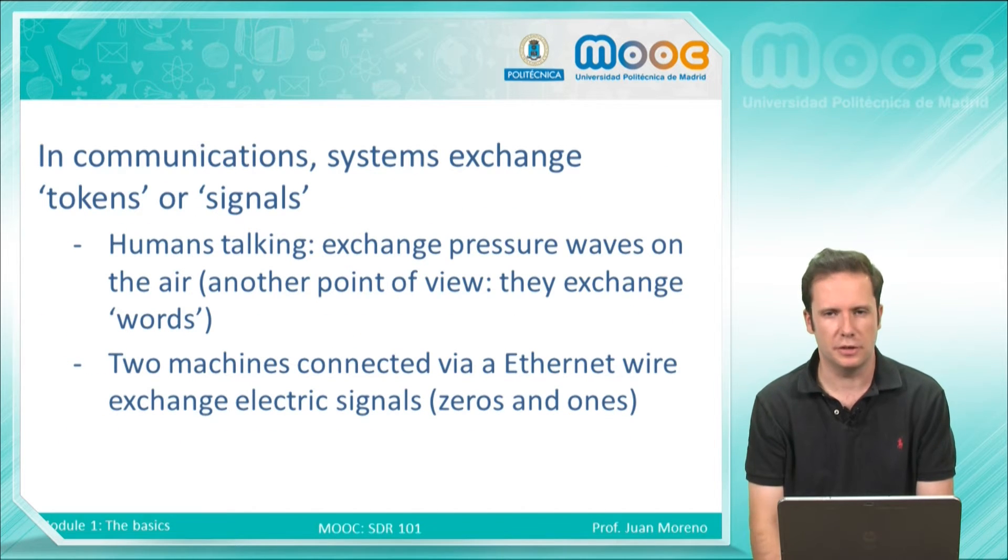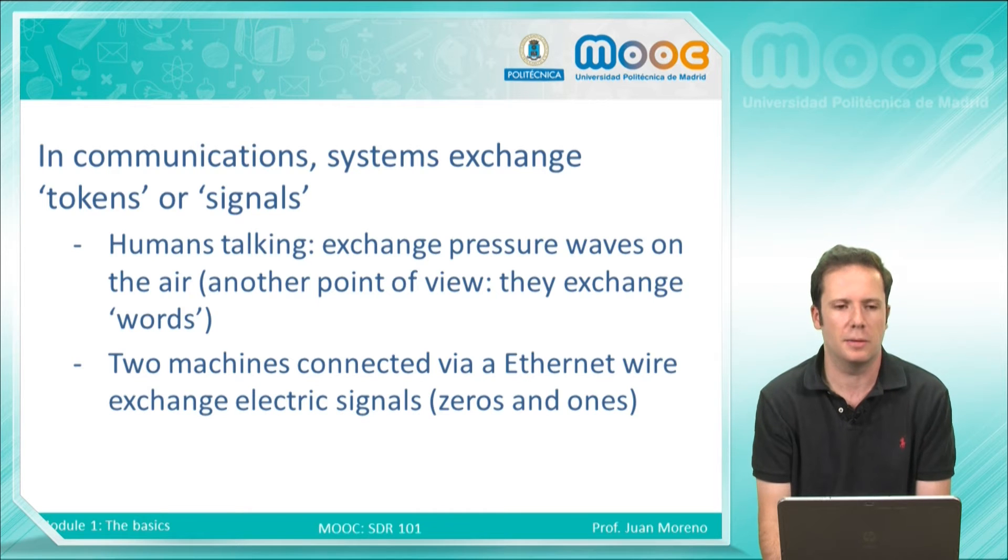For example, if we consider two people talking as a system, we need to know that there will be a transmitter - the person who is talking - a receiver - the person who is listening at that moment - and also these two persons are interchanging something. This something you can see, you can say from a physical point of view that they exchange pressure waves, or from a higher level you can say that they exchange words.